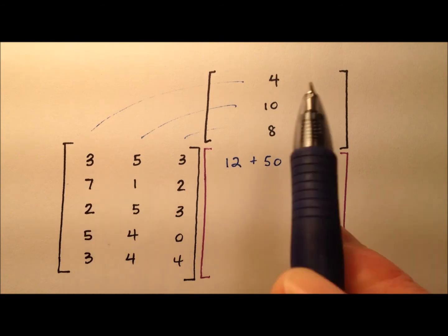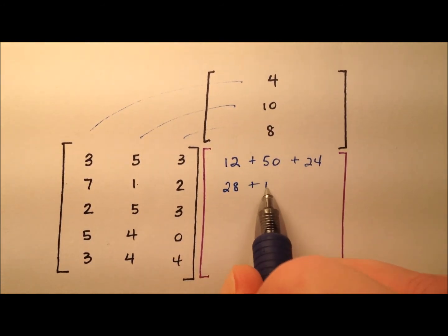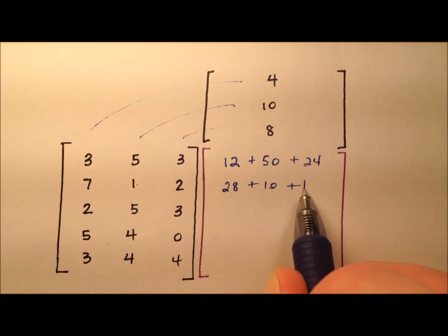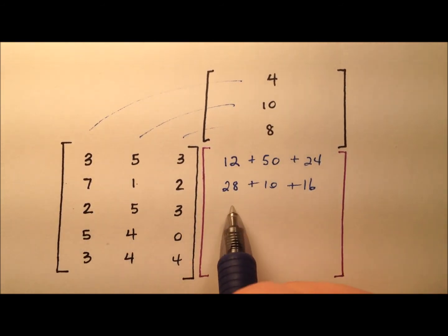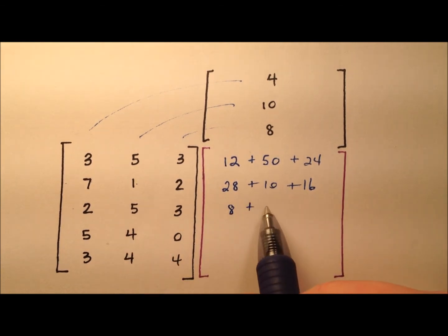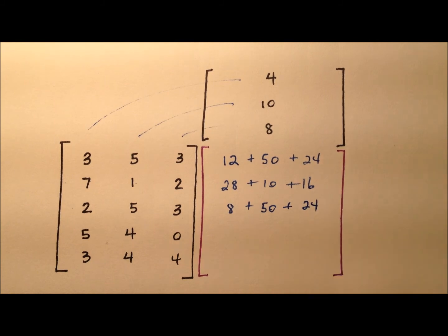Let's go ahead and do Tuesday. 7 times 4 is 28. 1 times 10 is 10. And 2 times 8 is 16. So on Wednesday, 2 times 4 is 8. 5 times 10 is 50. And 3 times 8 is 24.